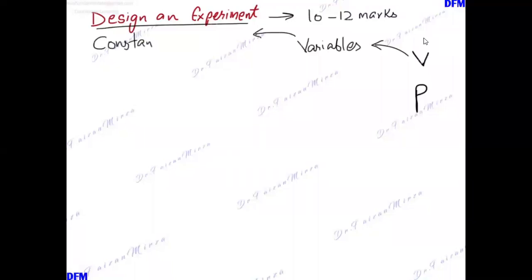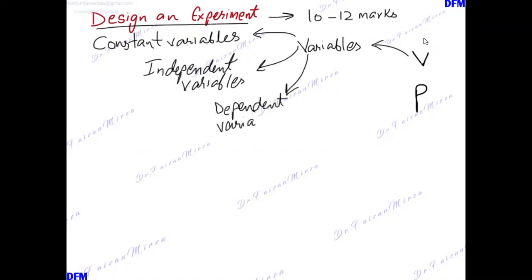When discussing variables, your answer must state what are the constant variables in the experiment, what is the independent variable, and what is the dependent variable. These three types of variables must be clearly highlighted and mentioned.